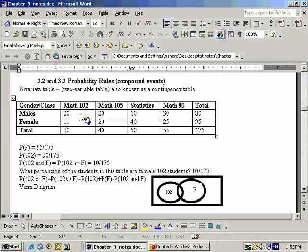Okay, this is section 3.2 and 3.3, and this is on some probability rules which have compound events. In other words, we're looking at two variables in here.